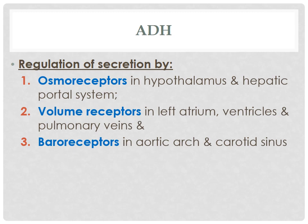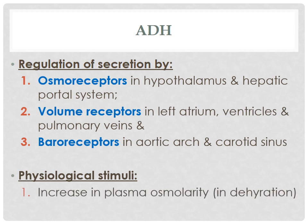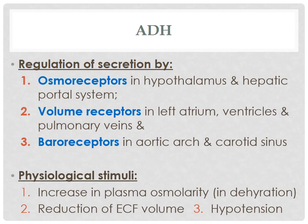Volume receptors detect extracellular fluid level and are situated in the left atrium, ventricles, as well as in pulmonary veins. Baroreceptors detect change in blood pressure and are present in the aortic arch and carotid sinus. The physiological stimuli for release of ADH include: increased plasma osmolarity (for example in dehydration), reduced extracellular fluid volume, and reduced blood pressure.